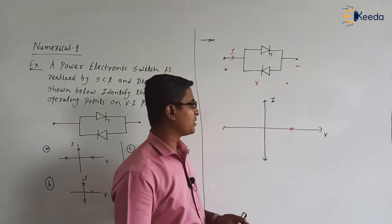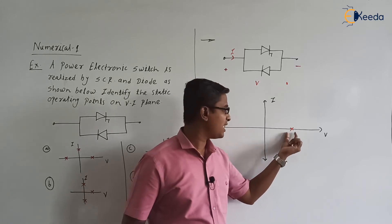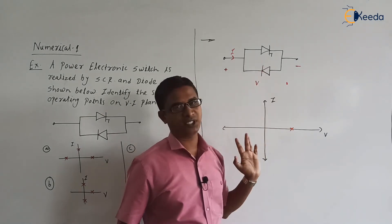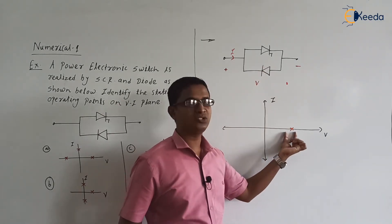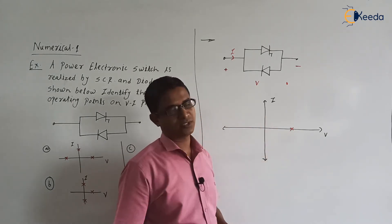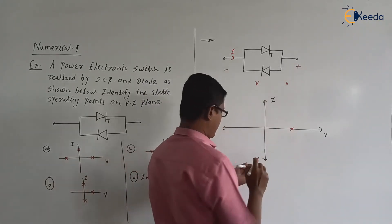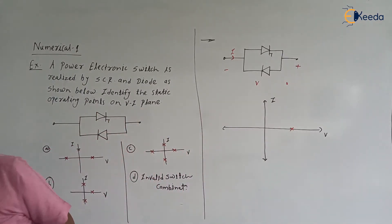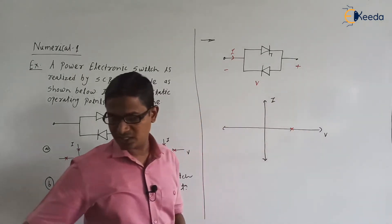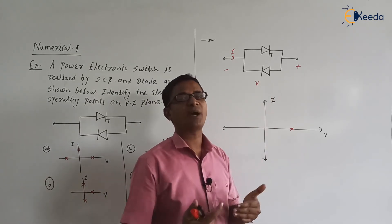The operating point will be at this location on the VI plane. At this point, the current is zero — meaning our switch is in the off state — and voltage is non-zero, meaning our switch combination is blocking the forward voltage. Now suppose we apply the reverse voltage — minus here and plus here. We have applied the reverse voltage across the switch. For unipolar or bipolar identification, we concentrate on the blocking mode of the switch.